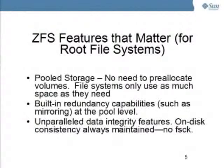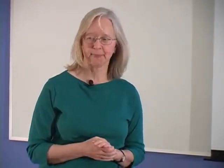Some of the features that matter for root file systems - the critical one is pooled storage. The fact that we don't have to pre-allocate space for a root file system in advance gives a lot of flexibility. These file systems only use as much space as they need from within the pool. ZFS pools have built-in redundancy capabilities such as mirroring, implemented at the pool level, so you don't have to set up individual mirroring at the file system level. ZFS also has unparalleled data integrity features - the on-disk consistency is always maintained, there's no need for an fsck command, and that data integrity is as useful for your root file system and system software as it is for your data.